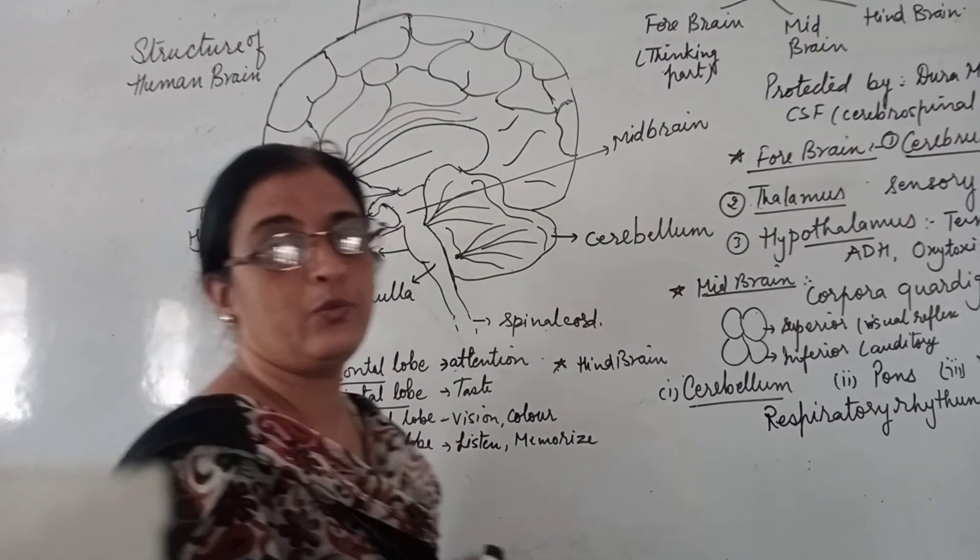The second part is the midbrain. In the midbrain, there are four lobes — superior lobes and inferior lobes. The superior lobes are the upper ones and the inferior lobes are the lower ones. The superior lobes are associated with visual reflexes, helping identify things you see.